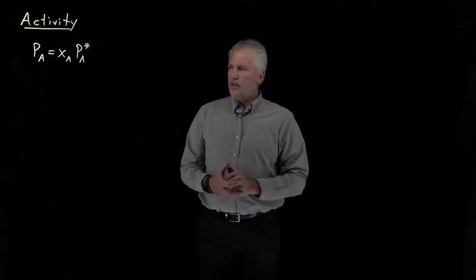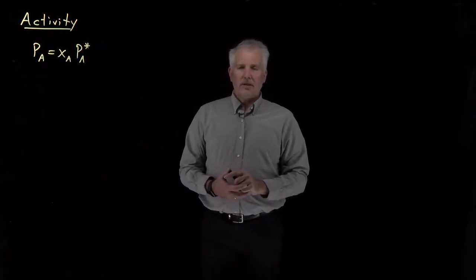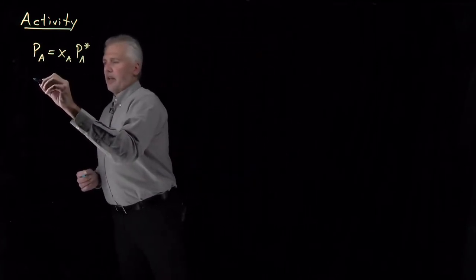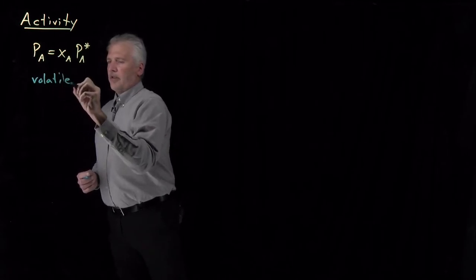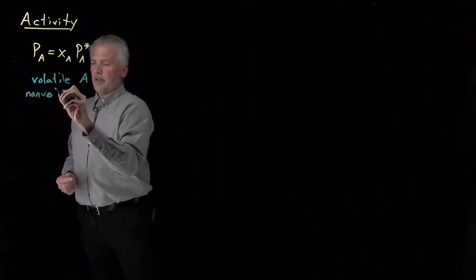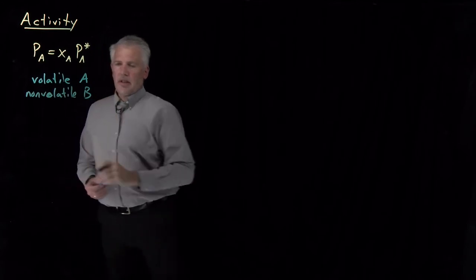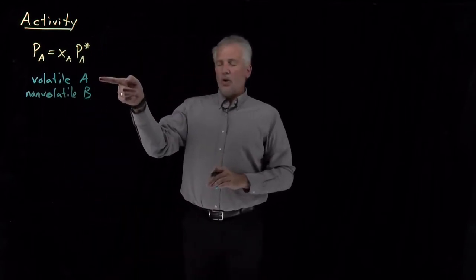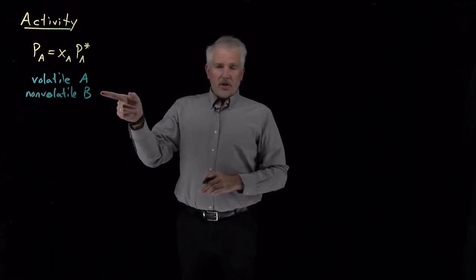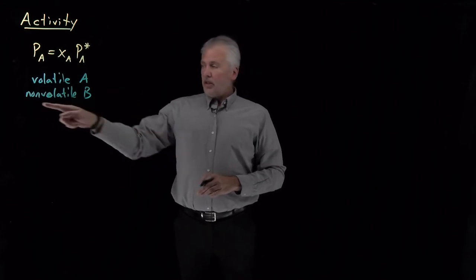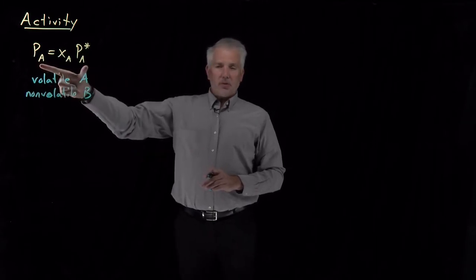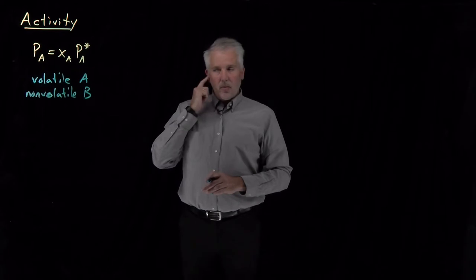To understand what's going on in non-ideal solutions and how to quantify their behavior, let's consider a case with a volatile solvent A and a non-volatile solute B. For example, water as the solvent and sodium chloride as the solute — salt water. Sodium chloride doesn't have significant vapor pressure and doesn't escape into the vapor phase, so the only partial pressures we need to worry about are those of the volatile solvent, water, or A.